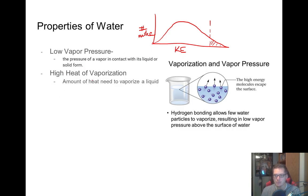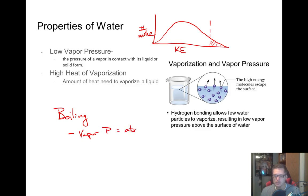This goes hand in hand with the heat of vaporization — essentially, how much energy you need to put in to make something boil. Remember, boiling happens when your vapor pressure equals atmospheric pressure. If your vapor pressure is generally very low because you have a lot of intermolecular forces like water does, then you have to add in a lot more heat in order to get it to equal atmospheric pressure, and therefore you need a much higher amount of heat in order to get it to vaporize. So those are two more properties of water: low vapor pressure and high heat of vaporization.